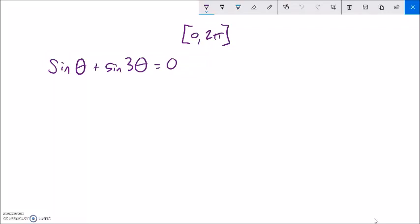This is precalculus T5A6. We are solving this equation. So it doesn't have any degrees in it, it doesn't say degrees in it, I'm just going to assume radians. So sine of theta plus sine of three theta equals zero.